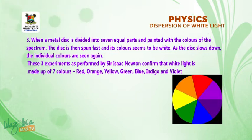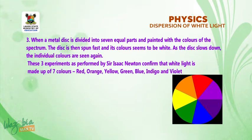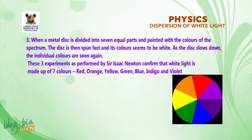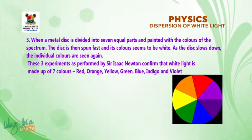Red, orange, yellow, green, blue, indigo and violet, which can be summarized as ROYGBIV.